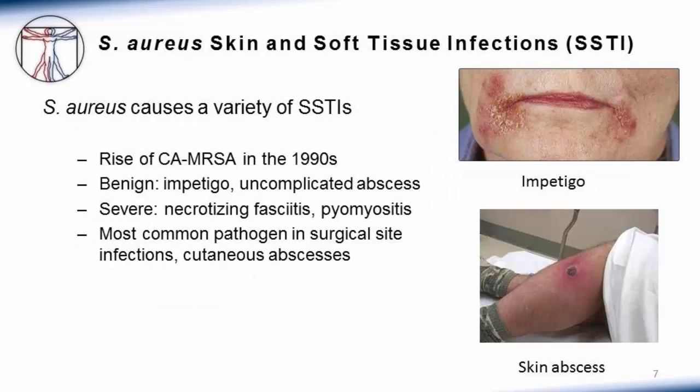Staph aureus causes a variety of skin and soft tissue infections. There was a rise of these infections in the 1990s associated with the community-acquired MRSA clone, leading to an increase in skin and soft tissue infections among populations not previously at high risk. Manifestations are diverse, ranging from relatively benign conditions such as impetigo — a staph infection restricted to the superficial layers of the skin — or an uncomplicated skin abscess, to severe infections including necrotizing fasciitis and pyomyositis. Staph aureus is the most common pathogen in surgical site infections and cutaneous abscesses.